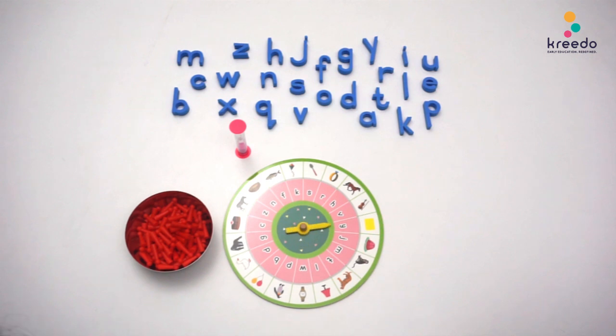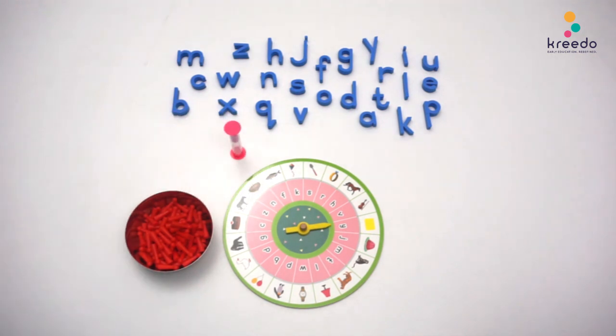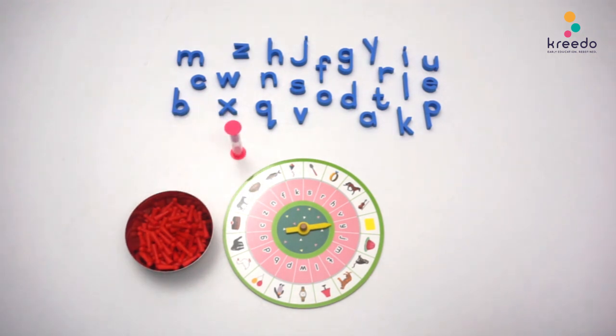The first player spins the roulette. The second player identifies the sound the pointer stopped on. The first player flips the timer, and the second player searches for the same sound.